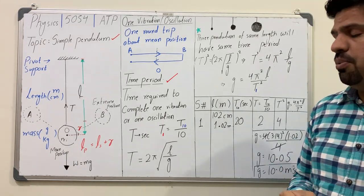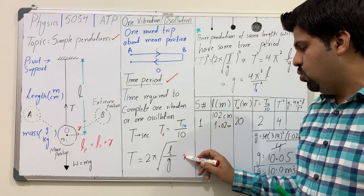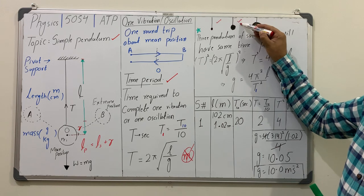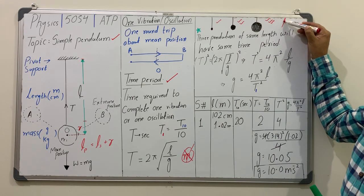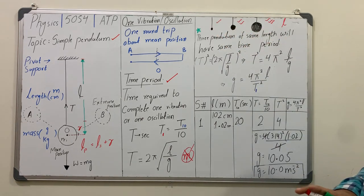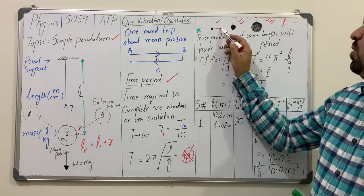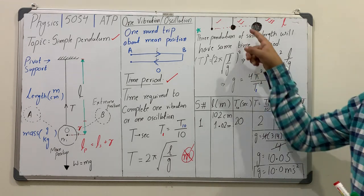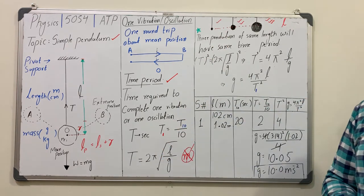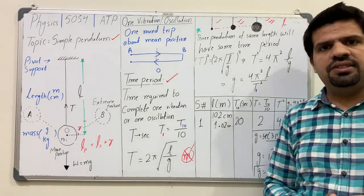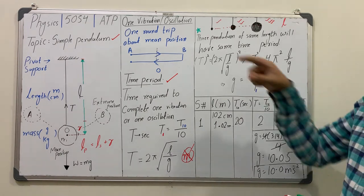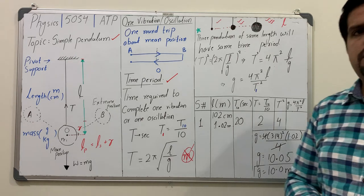A very important message in this formula is that there is no mass involved. It means if you hang three pendulums of the same length but different masses, they will have the same time period. The formula is independent of mass — time period remains constant if you change mass, as long as you keep the length constant. Three pendulums of the same length will have the same time period because time period depends only upon length and acceleration due to gravity.